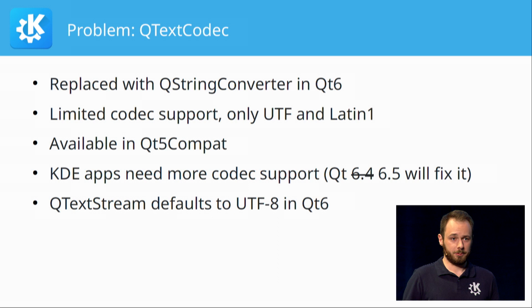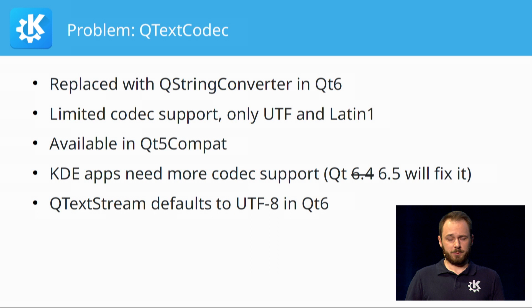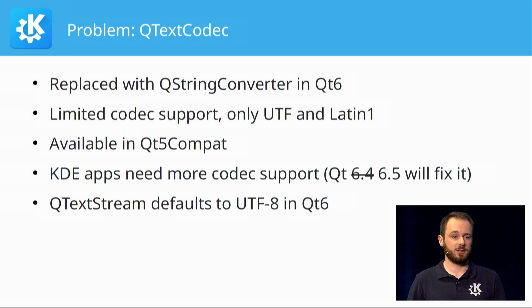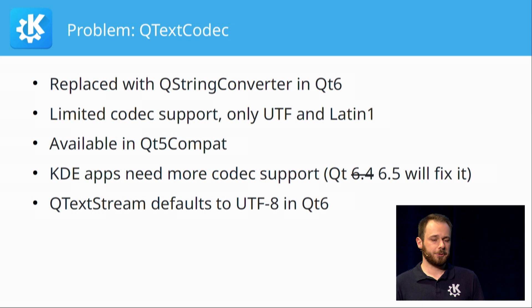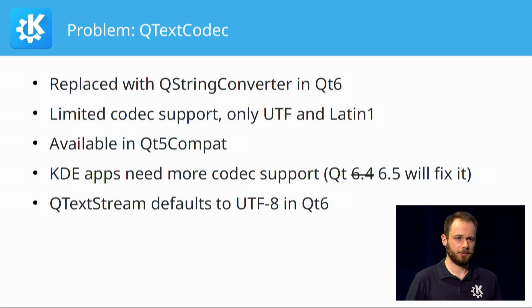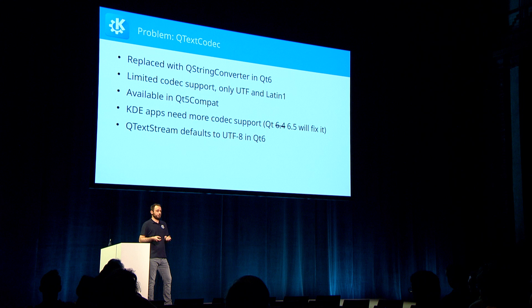Fortunately there's a solution on the horizon — adding back some of the missing codecs to QStringConverter — but as of right now it's not quite clear whether this will make it into 6.4 or be delayed to 6.5. QTextCodec is still available in the Qt 5 Compat library, but relying on a deprecated-by-definition module is not a great long-term solution. So watch out for that QTextStream behavior change in particular if you're on Windows.